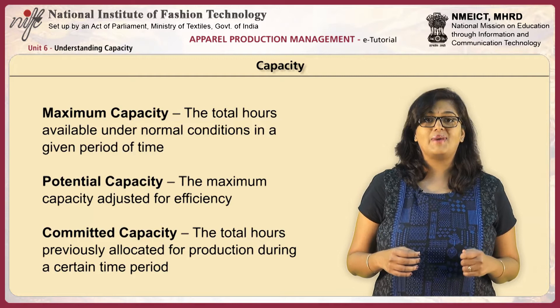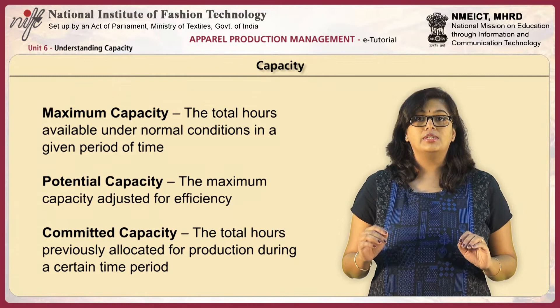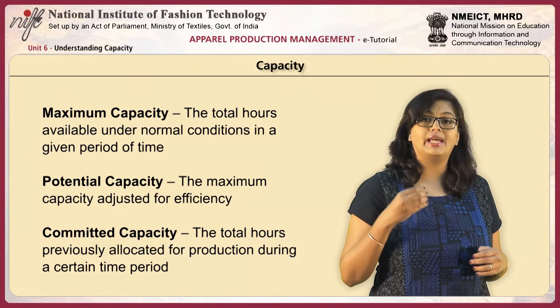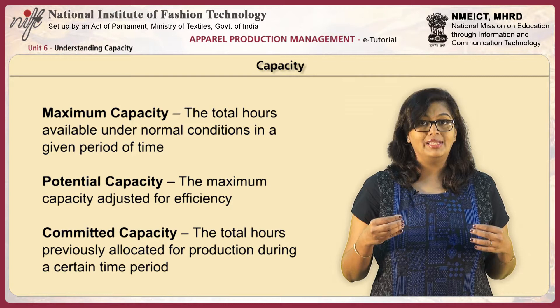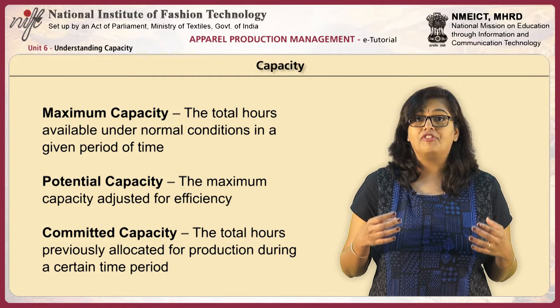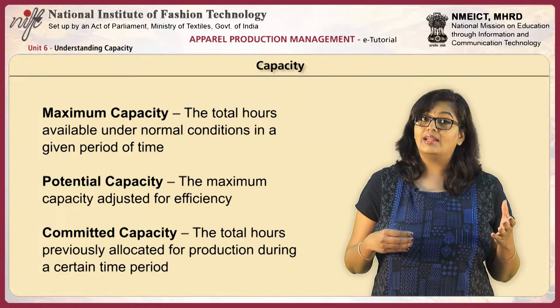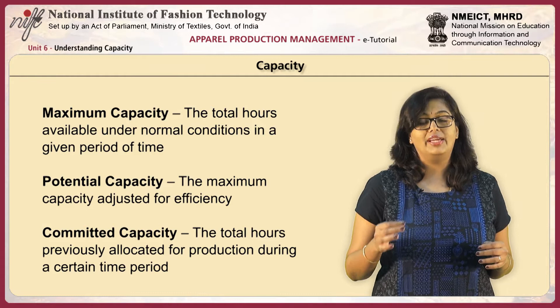Maximum capacity basically defines the total hours available under normal conditions in a given period of time. Like we discussed, capacity can be expressed in hours, minutes, or even garments. Generally while defining any kind of factory, it is defined in hours. To reiterate, maximum capacity defines the total hours available.